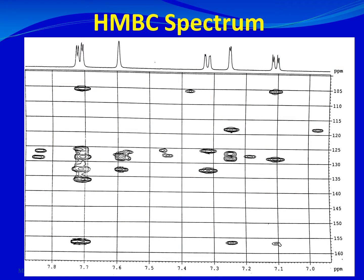Let's see how we can read the spectrum and extract information. Here is a part of the HMBC spectrum of a molecule. Since it's a heteronuclear technique, we see correlations between protons and carbons. The carbon scale is shown on one axis and the proton NMR scale on the other, with the proton spectrum drawn at the top for convenience. Just like HSQC or HMQC, there is no diagonal in the HMBC spectrum.